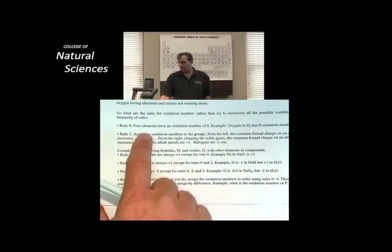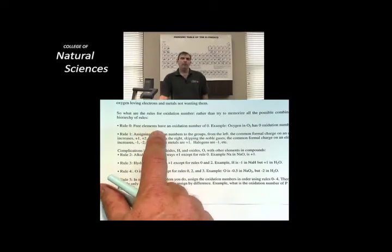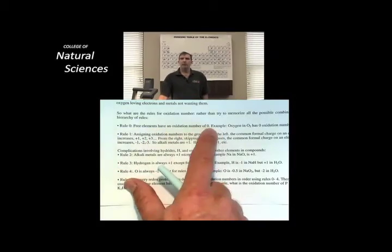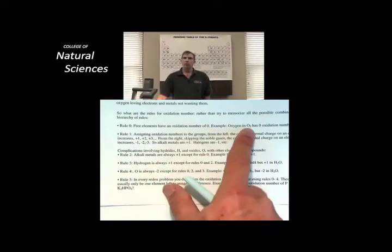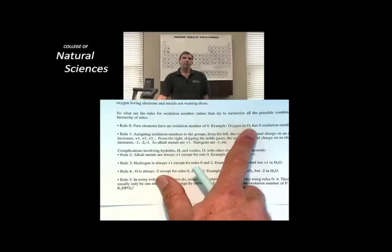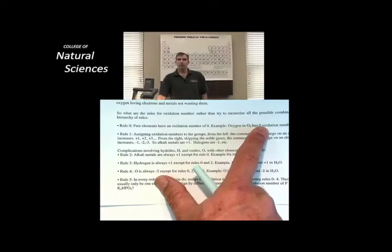The first rule is what we've seen before: free elements have an oxidation number of zero. These are elements that have no other atoms other than a single monatomic species. So oxygen in O2 or fluorine in F2, phosphorus P4, sulfur S8, any of these compounds, because the overall compound has only a single atom in it, the oxidation number has to be zero.